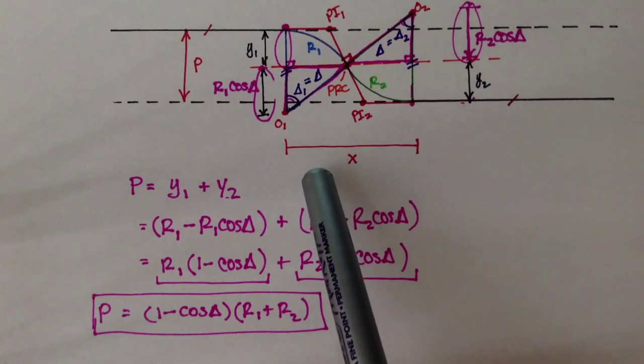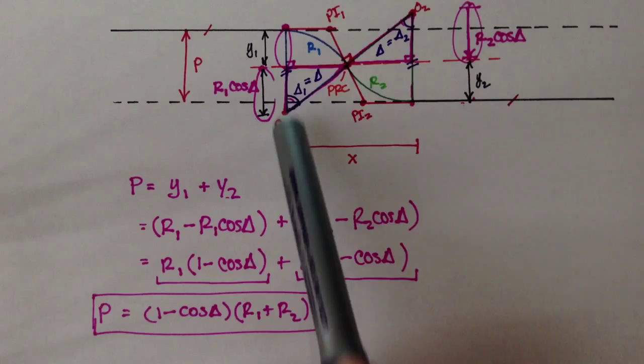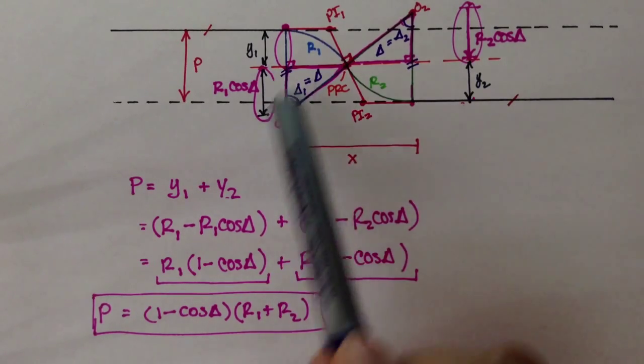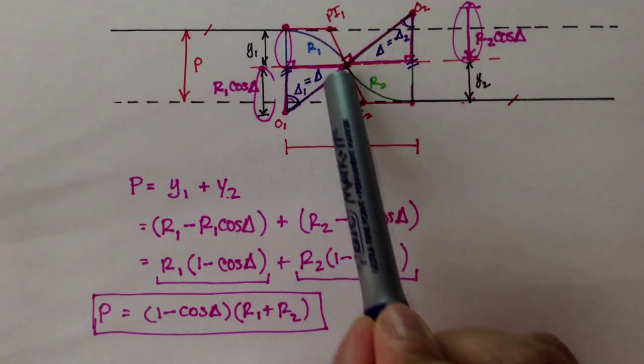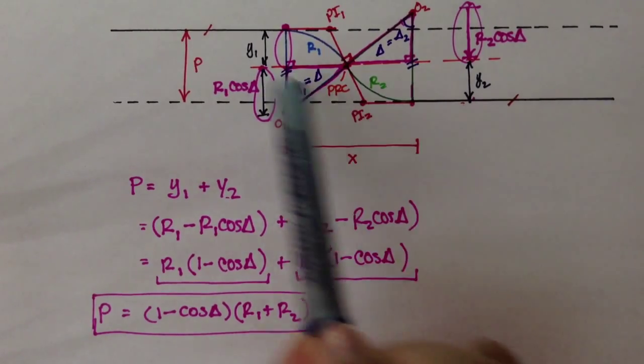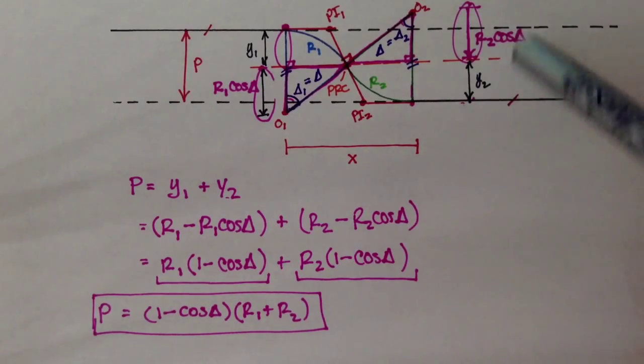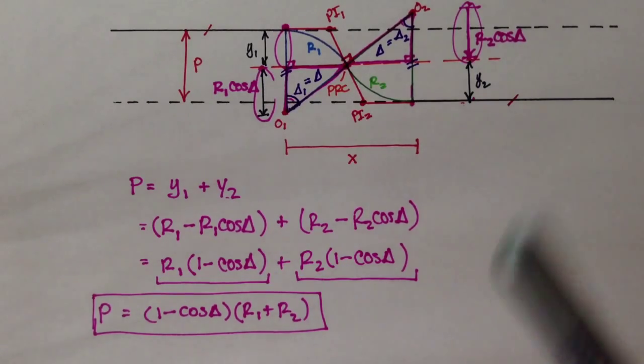the transition length is the length from BC1 to EC2, or the distance that it takes a reverse compound curve to transition between this road and this road. But remember, these two roads are parallel to one another, okay? So,